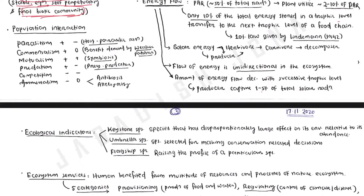Hello everyone, welcome back to my channel. We had already covered what is ecology, what is ecosystem, what are the ecological pyramids. Today we are going to cover population interactions, ecological indicators, ecosystem services, and some important points. We had already covered energy flow in ecosystem, basic principles and concepts of ecosystem, community types, community succession, etc.